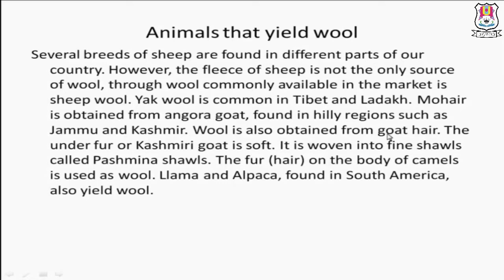Wool is also obtained from goat hair. The underfur of the Kashmiri goat is soft and it is woven into fine shawls called Pashmina shawls. The fur on the body of camels is also used as wool — camels ke bhi fur se hum log wool bana sakte hain. Llama and alpaca, found in South America, also yield wool — llama and alpaca ke hair se bhi hum log wool banate hain.